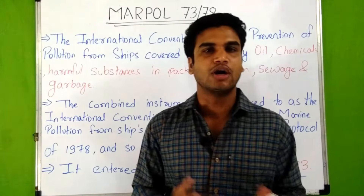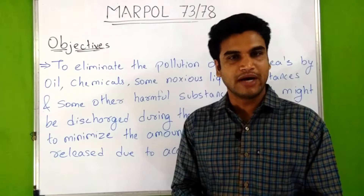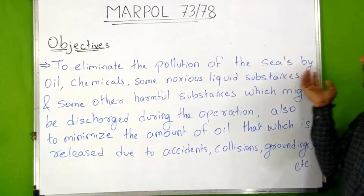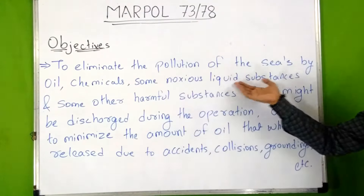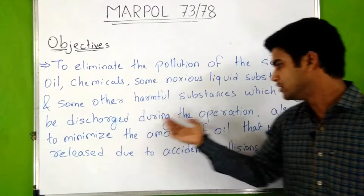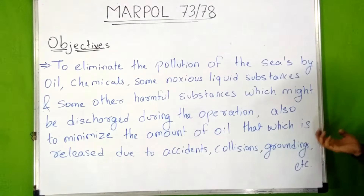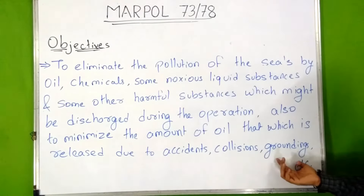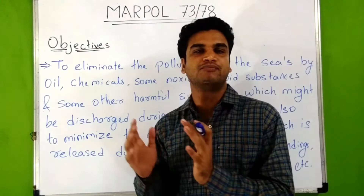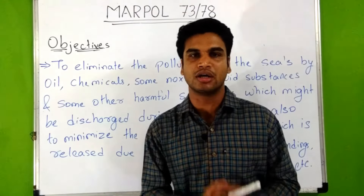Now let's see what is the objective of MARPOL 73/78. The objective of MARPOL 73/78 is to eliminate the pollution of the seas by oil, chemicals, noxious liquid substances, and other harmful substances which might be discharged during operations, and also to minimize the amount of oil released due to accidents, collisions, groundings, etc. In summary, the objective of MARPOL is the prevention of pollution of the marine environment from ships by accidental or operational causes.